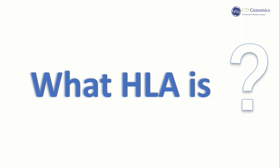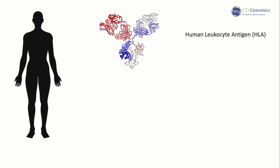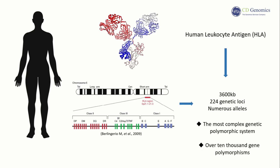First, let's understand what HLA is. The Major Histocompatibility Complex, also known as the MHC gene, is a gene family present in the genomes of most vertebrates and closely related to the immune system. In humans, the MHC is called the human leukocyte antigen, also known as HLA, and the genes encoding HLA are located on the short arm of chromosome 6, within a range of 3,600 KB containing 224 genetic loci, each containing numerous alleles. It is currently the most complex genetic polymorphic system known in the human body, with over 10,000 gene polymorphisms.